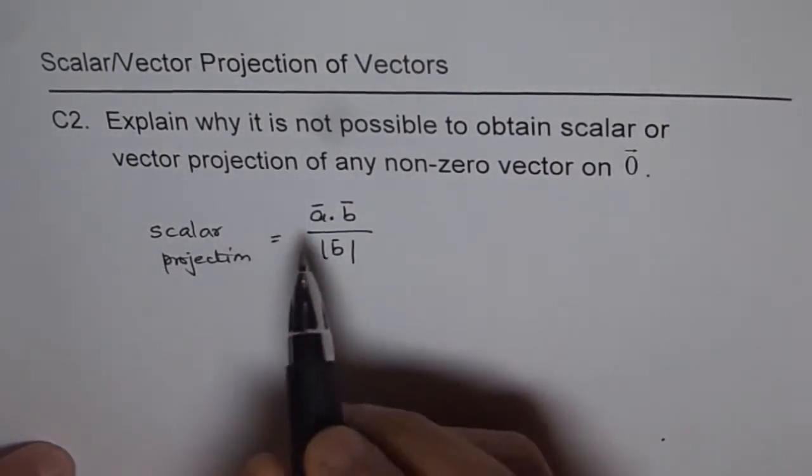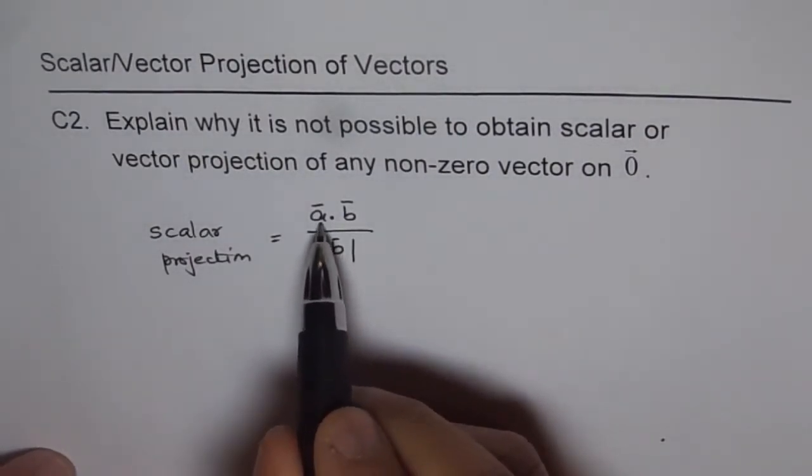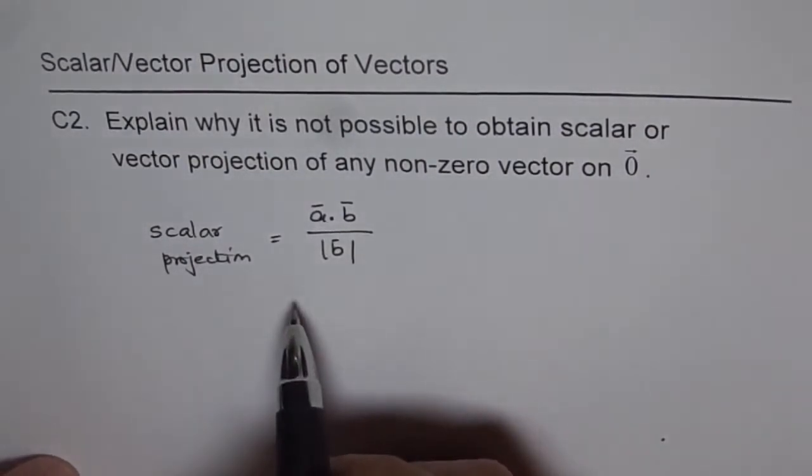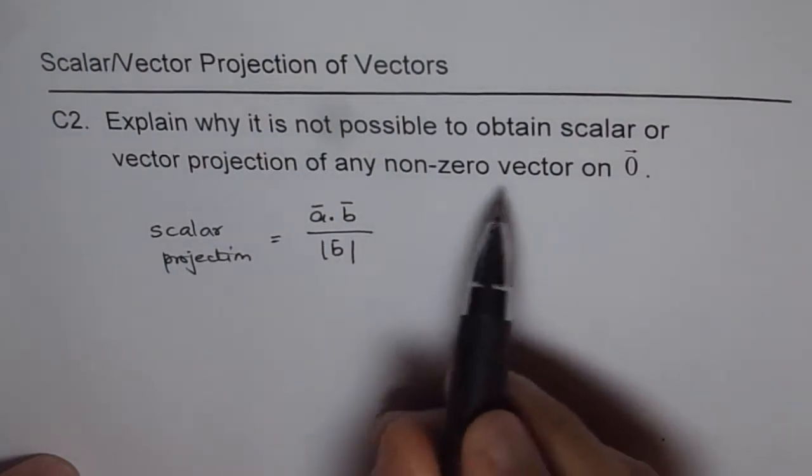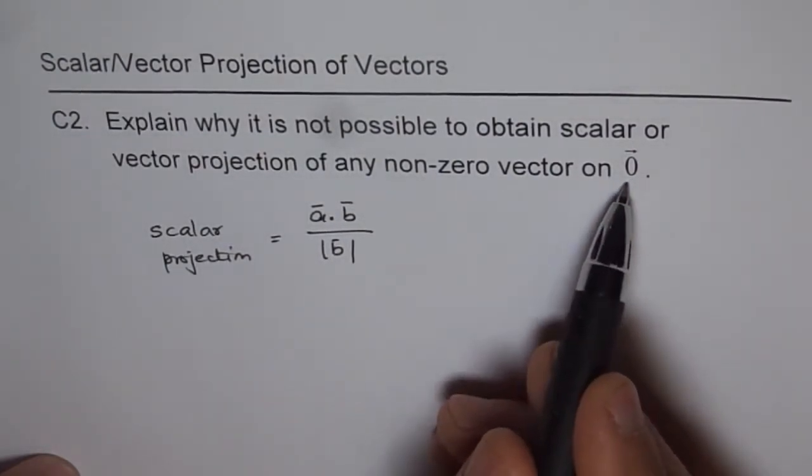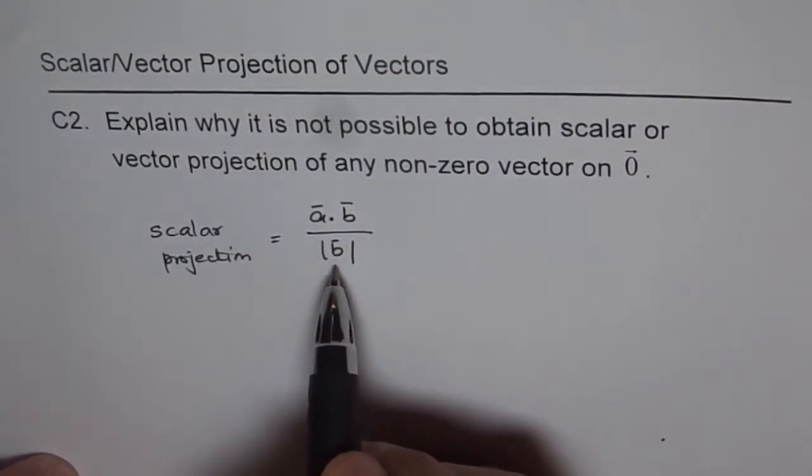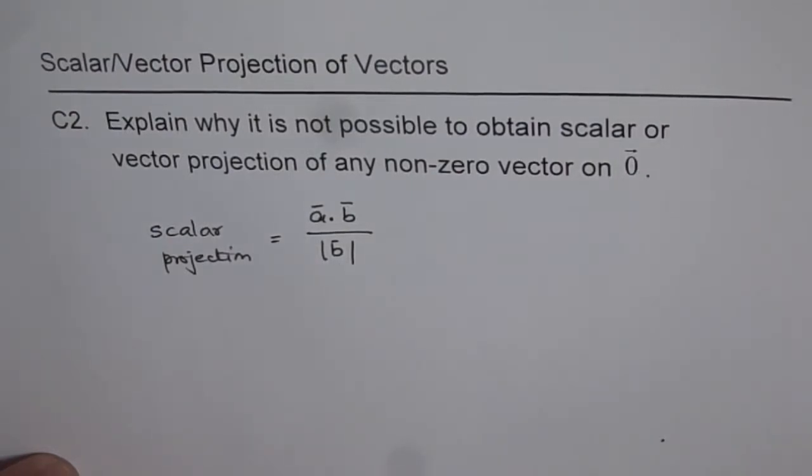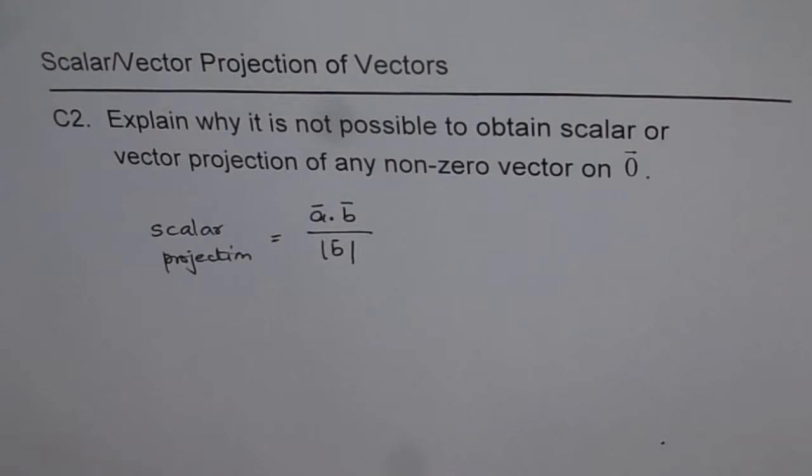Now if you are trying to project a non-zero vector, let's say A is a non-zero vector, on B and in this case B becomes our zero vector. In that case, what do we get in the denominator? Magnitude of zero vector, which is zero. So anything divided by zero is not really a number which we can reach. It's invalid. Therefore, mathematically it is not possible to calculate it.